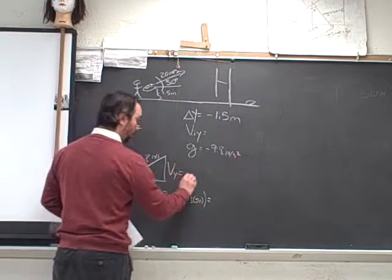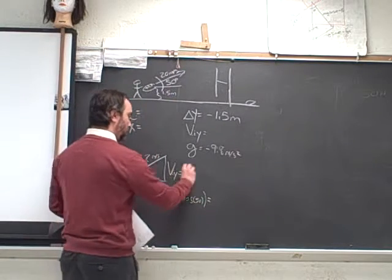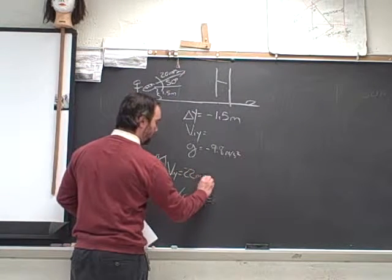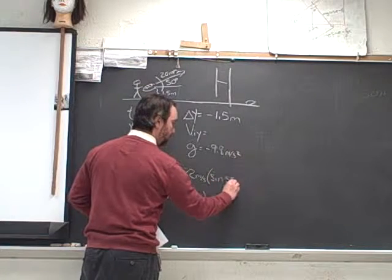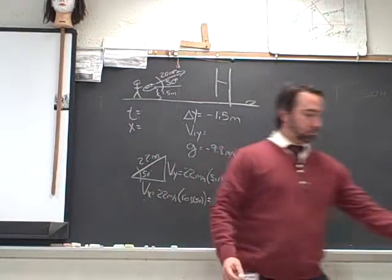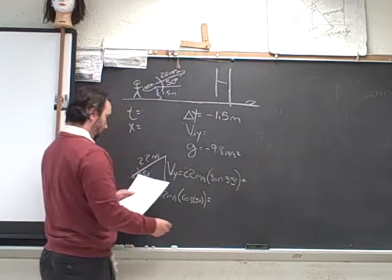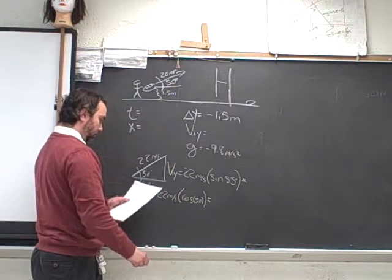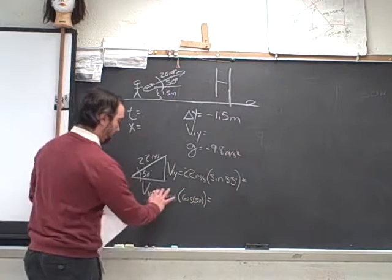And the velocity, the initial velocity in the y direction is going to slow down as gravity takes over. It's going to be the same 22 meters per second times the sine of 55 degrees. And to do that, we find that the cosine of 50 degrees times the 22, rather 20 meters per second.